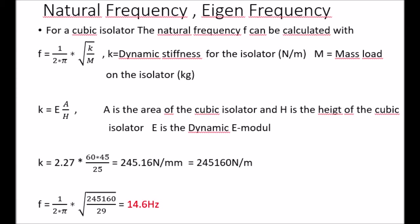To calculate your natural frequency, you can use the following formulas. And when you know the natural frequency, you can get the hang of how well your isolator will work and for which frequencies. Inputs to the formulas are the mass load on the isolator and the dynamic E-module. The mass load is here 25 kg, and this will get the result 14.6 Hz.